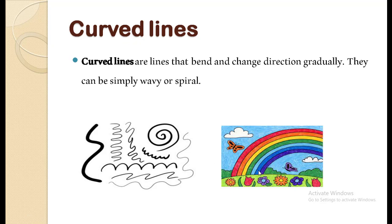Now, come to the next curve lines. Curve lines are lines that bend and change direction gradually. They can be simply wavy or spiral. Aap deekh sakte hai ki ye kis tarhaan se move kar rahe hai. Aur hum rainbow kis tarhaan se curve line ki help se draw kar sakte hai. You can see the drawing.